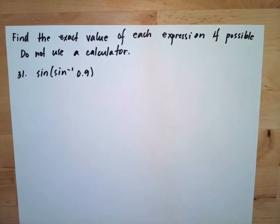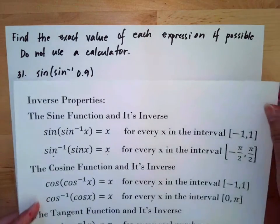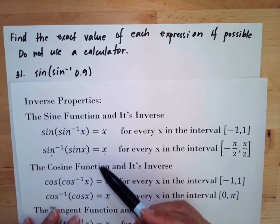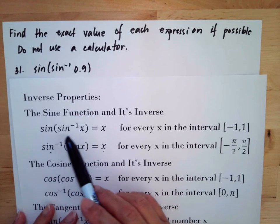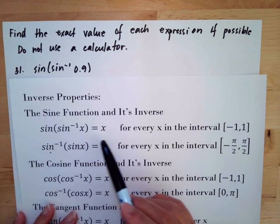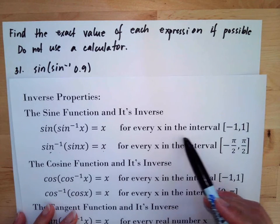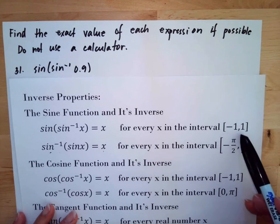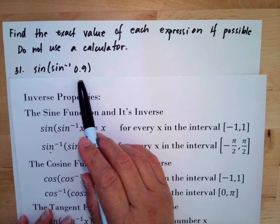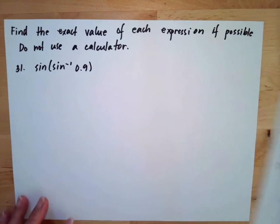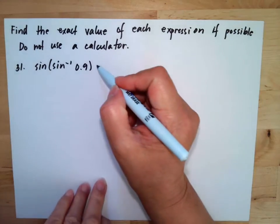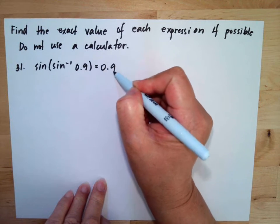Now if you remember in our first video, we said the properties of inverse properties are sin(sin^-1(x)) is equal to x for every x in the interval of negative 1 to 1. Now this is 0.9, so it is within the interval. So we can say this is equal to 0.9.